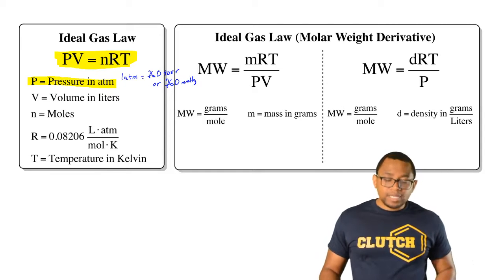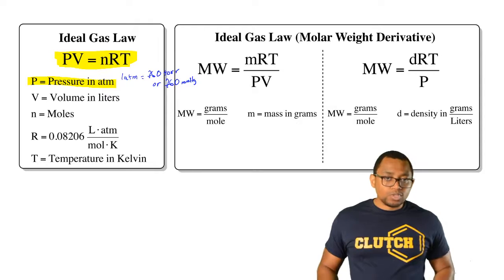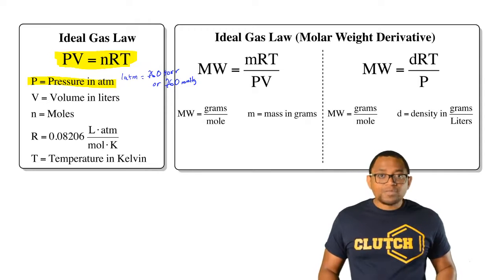V represents volume in liters. N is representing the moles, the total moles of gas within the container.